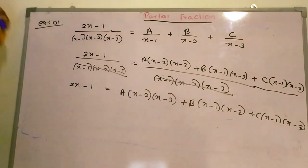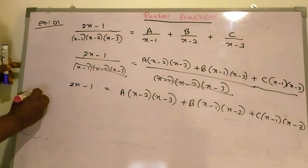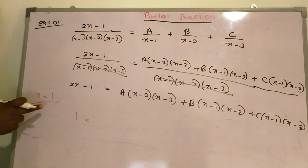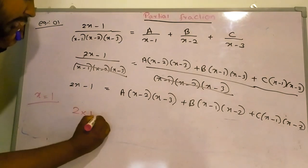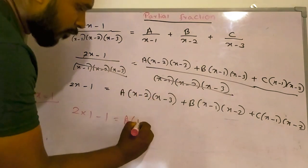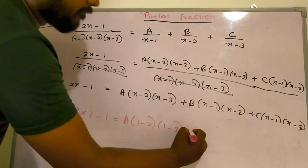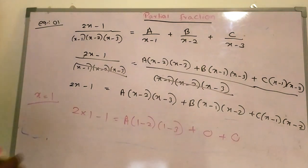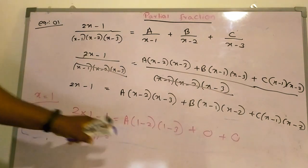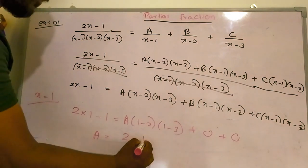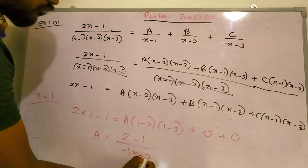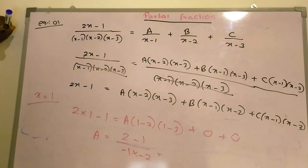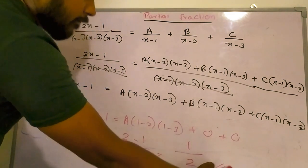Comparing the two sides, when you put x equal to 1 into the complete equation: 2(1) minus 1 equals A times (1 minus 2)(1 minus 3), while the B and C terms become zero. Therefore A equals (2 minus 1) over (minus 1)(minus 2), which gives A equals one half.